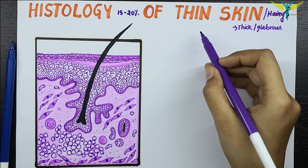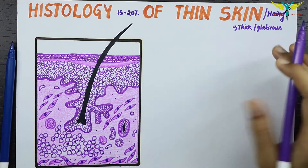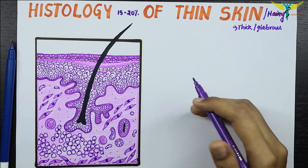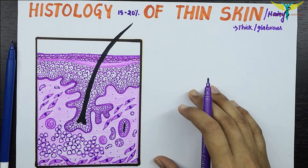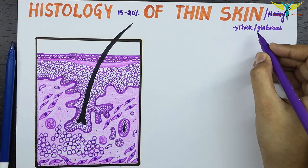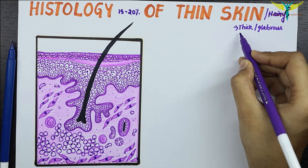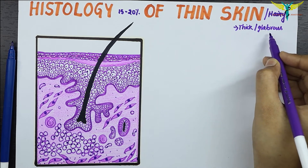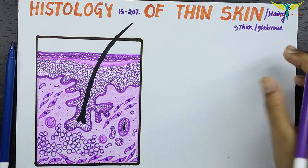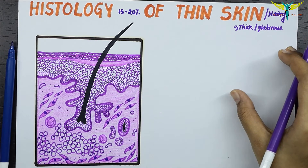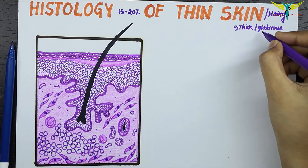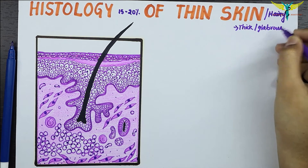In the thin skin or hairy skin, the epidermis is very thin, it contains hair, and it is found in all other parts of the body except the palms and soles, where the glabrous or thick skin is present. In the thick or glabrous skin, the epidermis is very thick and a thick layer of the stratum corneum is seen.